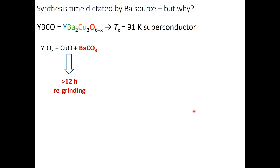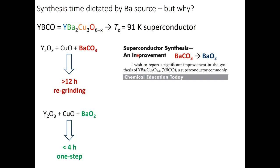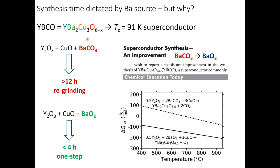The typical recipe for YBCO involves Y2O3 plus copper oxide plus barium carbonate, taking about 12 hours at 900°C with extensive re-grinding and re-annealing due to poor kinetics. There was an interesting one-page paper titled 'Superconductor Synthesis and Improvement' that simply stated: by replacing barium carbonate with barium peroxide, they could synthesize YBCO in one step in less than four hours. No discussion of why—just an intriguing observation that by switching one precursor you can make the reaction much faster.